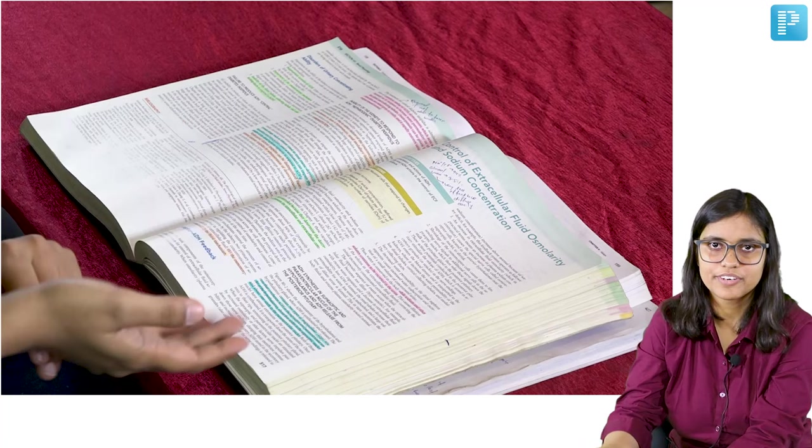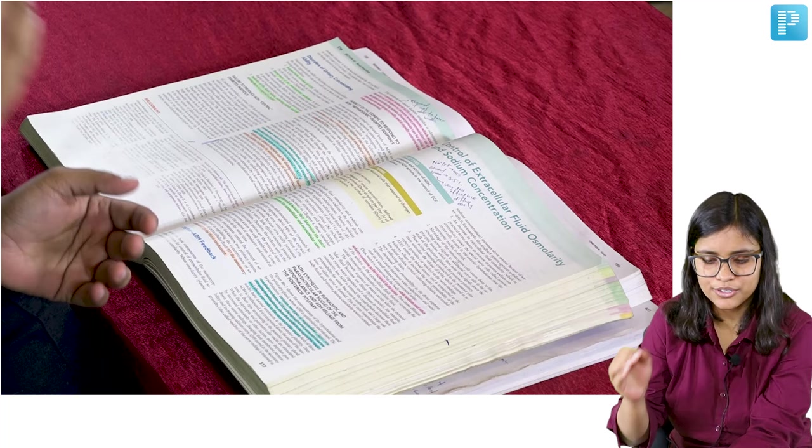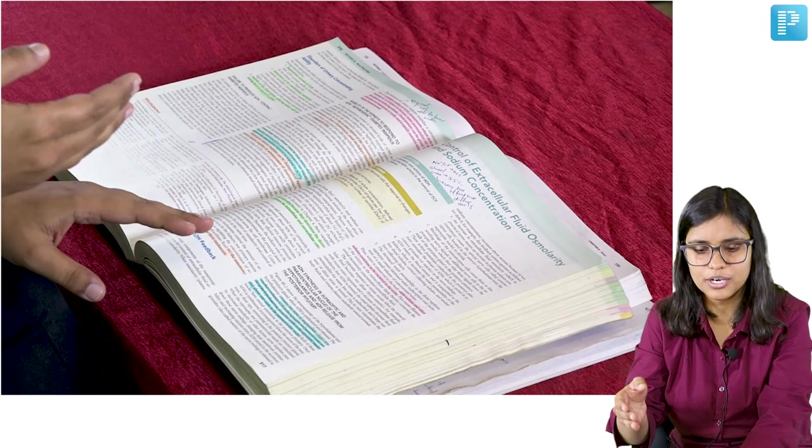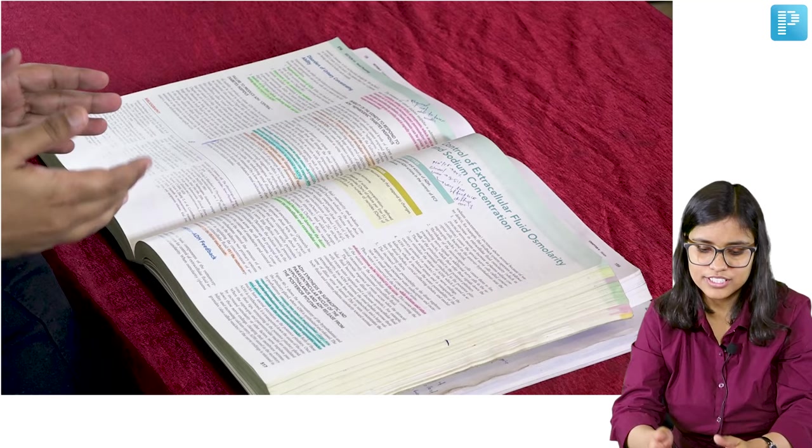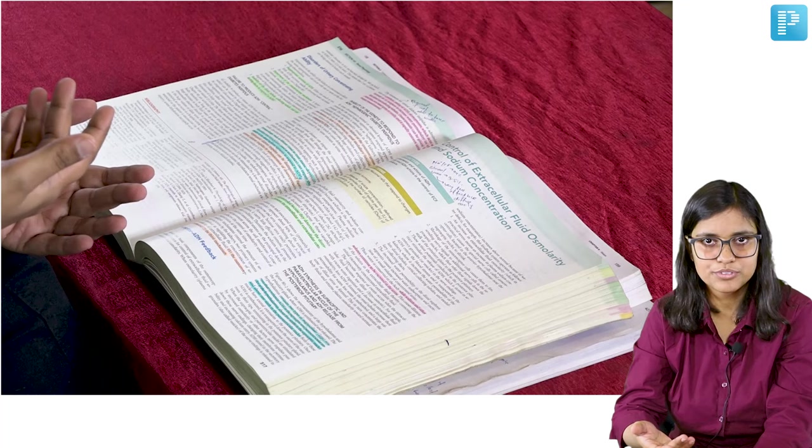There are two things: you have to read first time and then revise. When you read first time, you don't highlight - you read line by line. Then when you come back to the page for revision, if you have highlighted important points, it will be active study. You will know that you just saw the point.